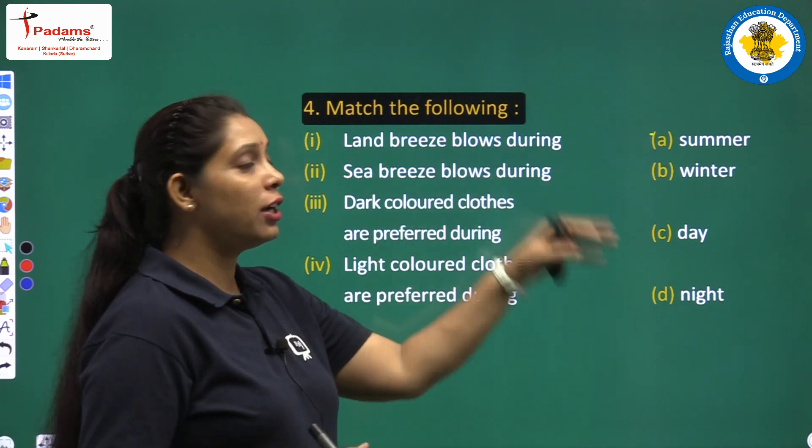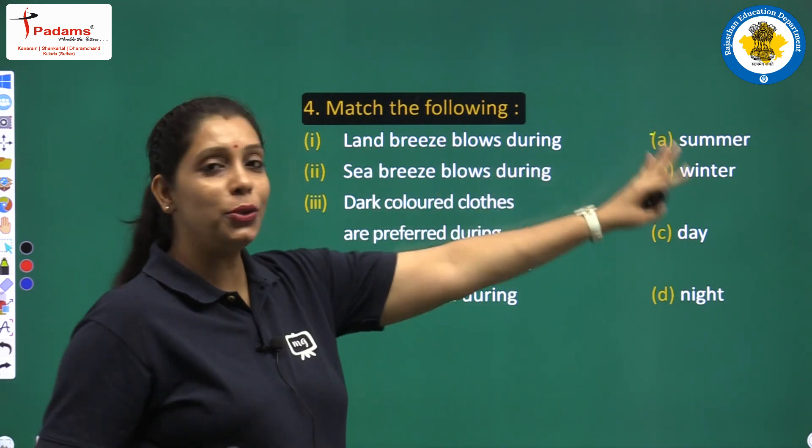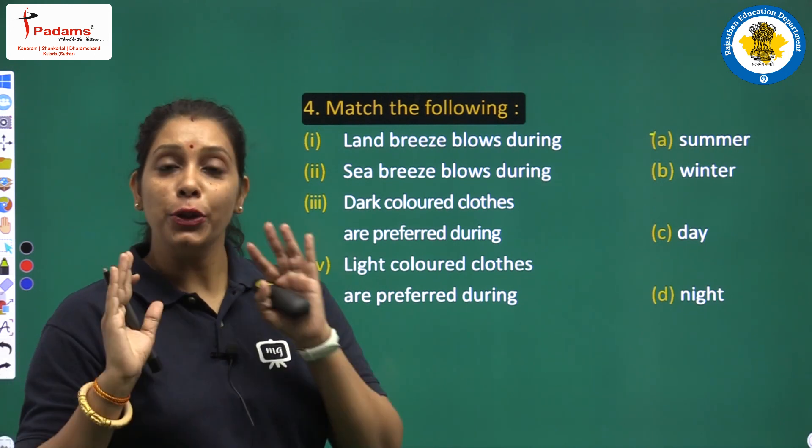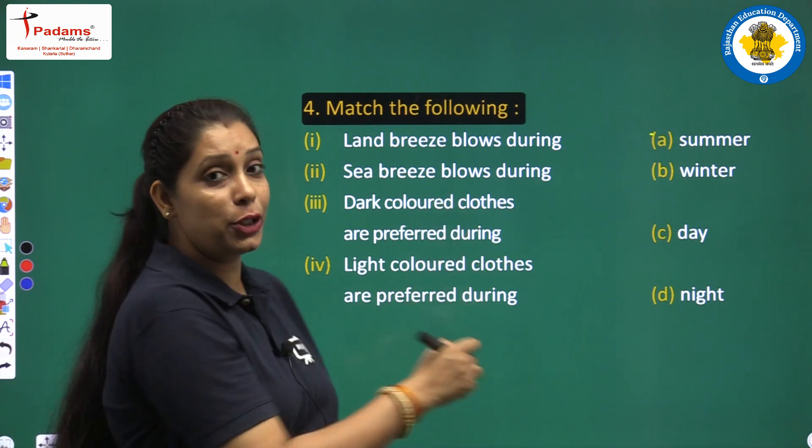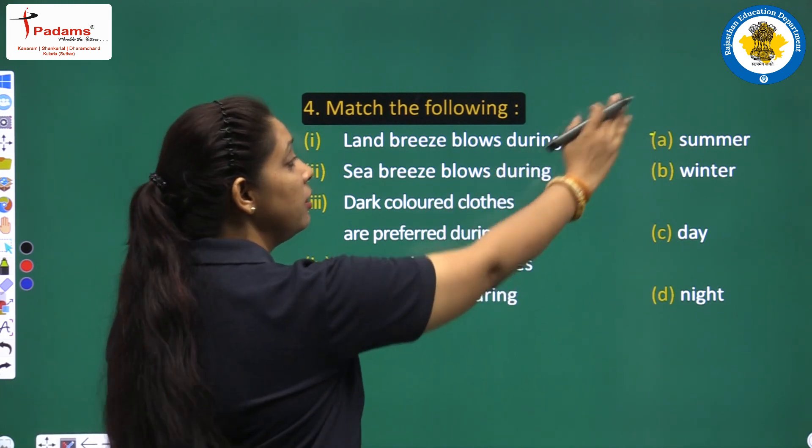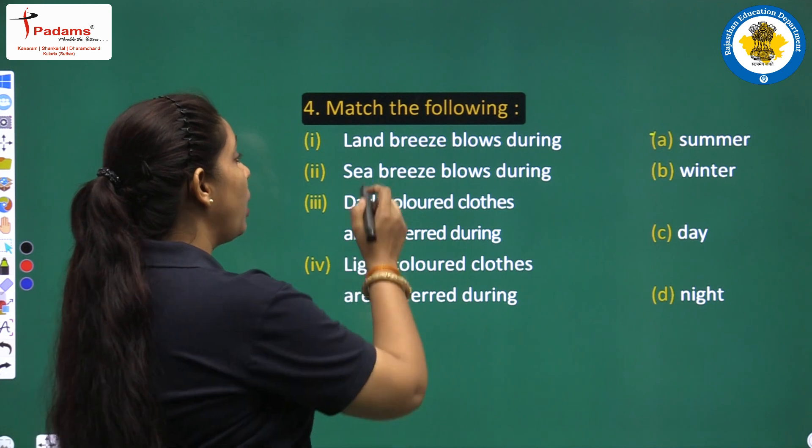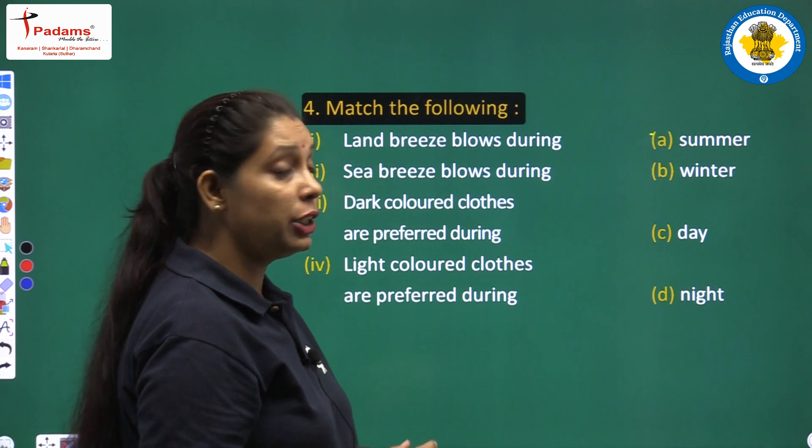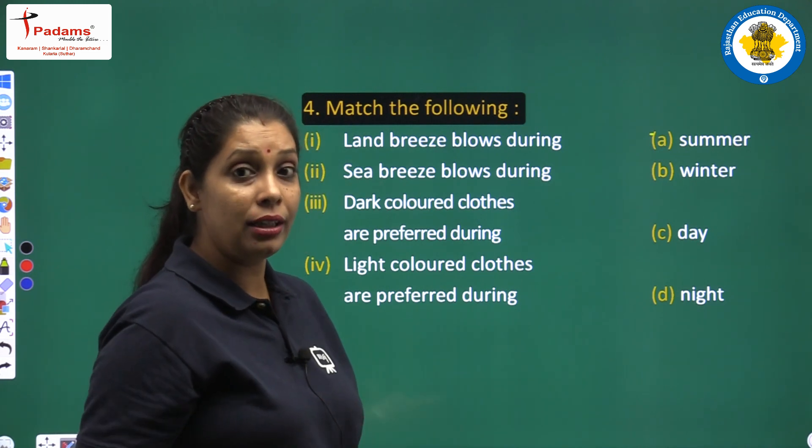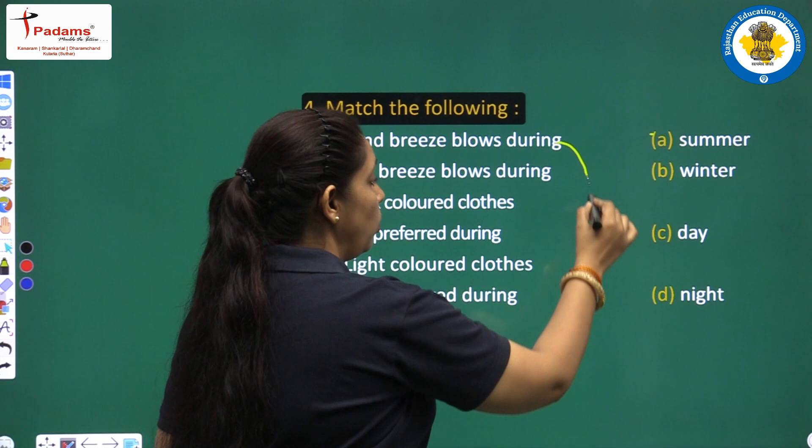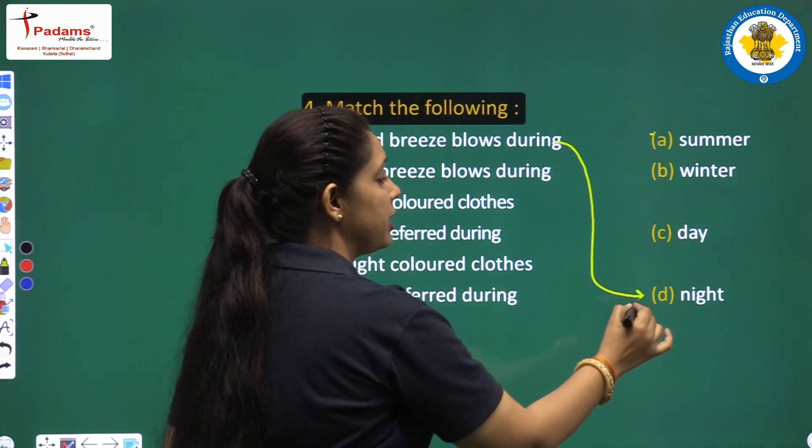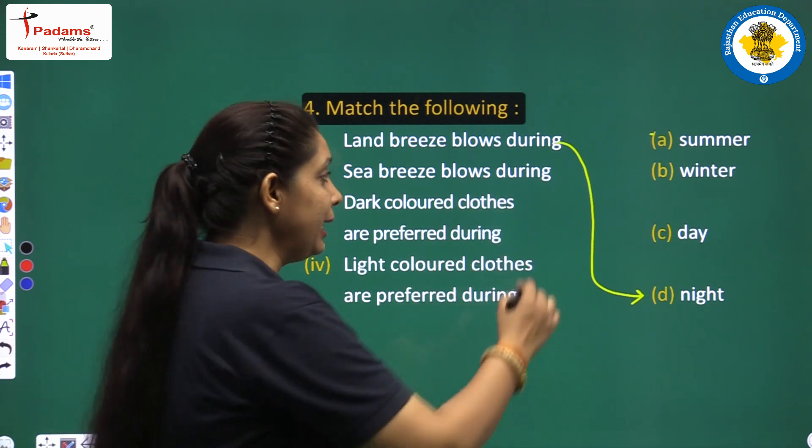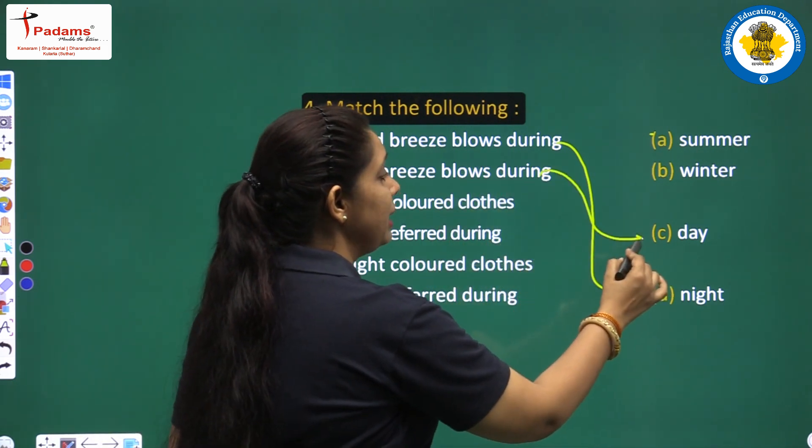Come to our next question. What is our next question? Match the following. We have to match this column to this column. You do not have to write zigzag. You have to write the correct answer in front of it. Let us read one. Land breeze blows during which time? Land breeze blows during night time. Sea breeze blows during day time. Match it with day.